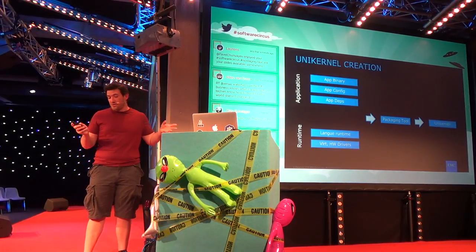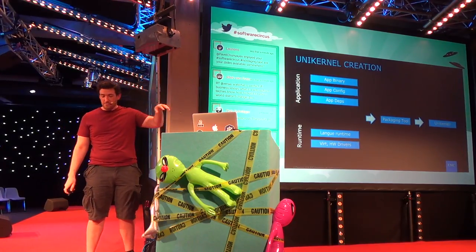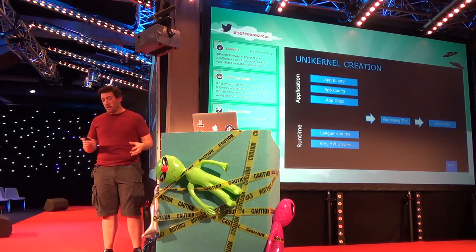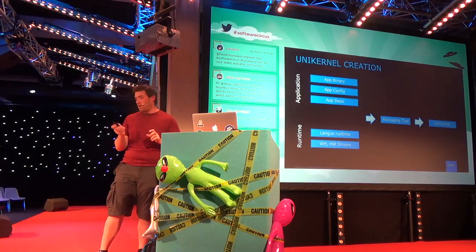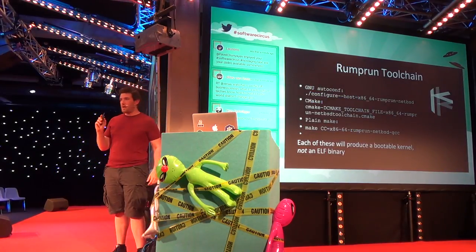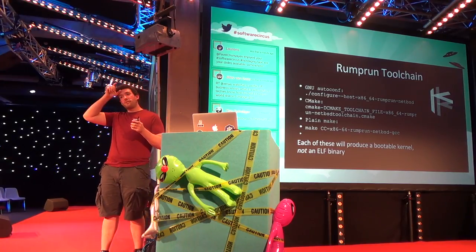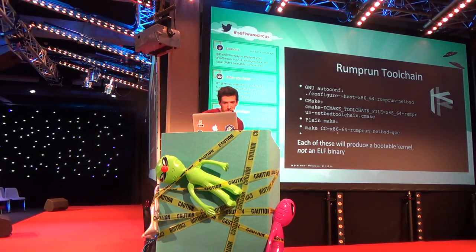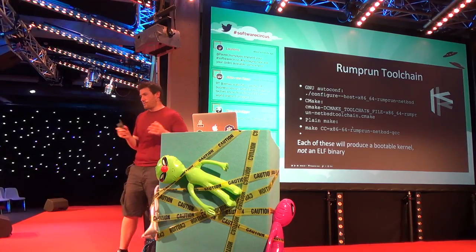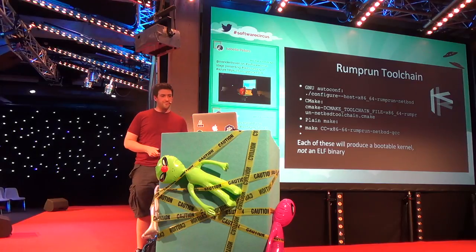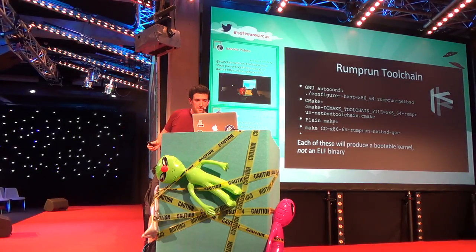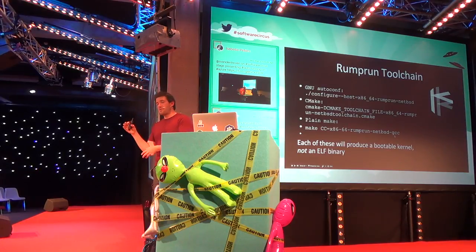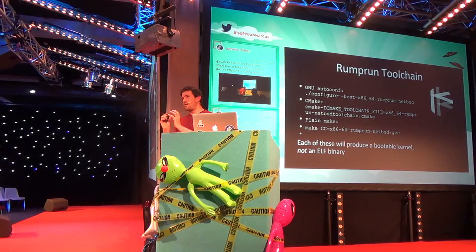How do you make a Unikernel? It's pretty simple. You take application source code, config, and dependencies, bundle them together with a runtime and the drivers you need, and produce a single, small, lightweight, bootable image. Here's an example of a Unikernel we employ called Rump Run. You give it a platform and target — this is built for x86-64. It will run on VirtIO drivers, which are common to QEMU, VirtualBox, and VMware. It's like a modified version of GCC: you put in some C source code and instead of spitting out an ELF binary, it spits out a bootable image that you can then boot with QEMU or VirtualBox or a hypervisor.